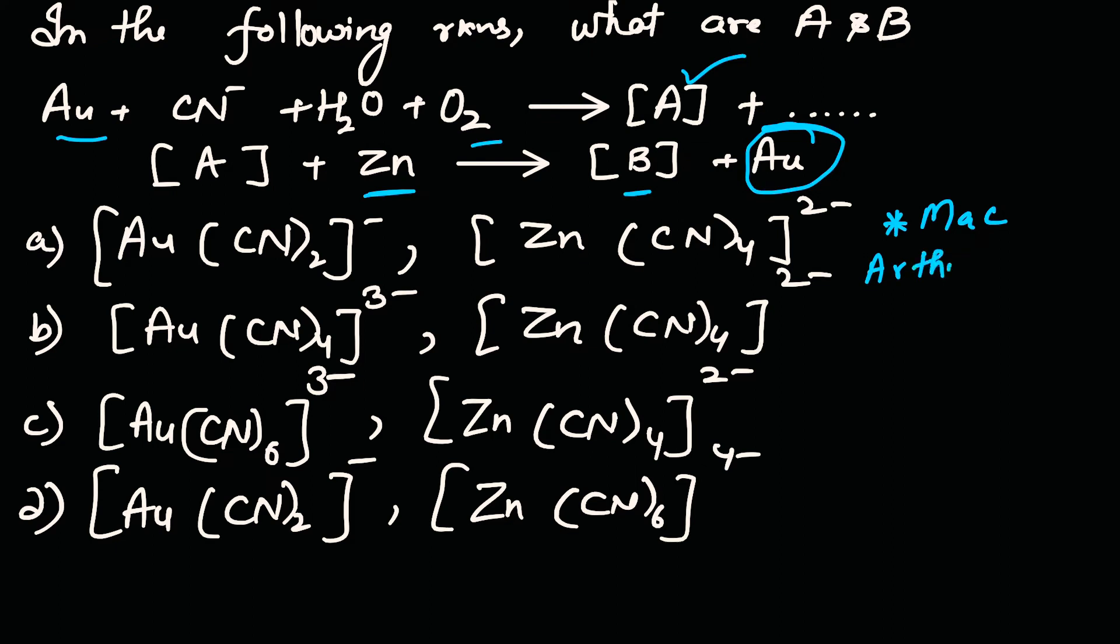This process is used for the concentration of gold ore and is included in leaching. We react the ore of gold with a chemical reagent, in this case NaCN or KCN, plus H2O plus O2.